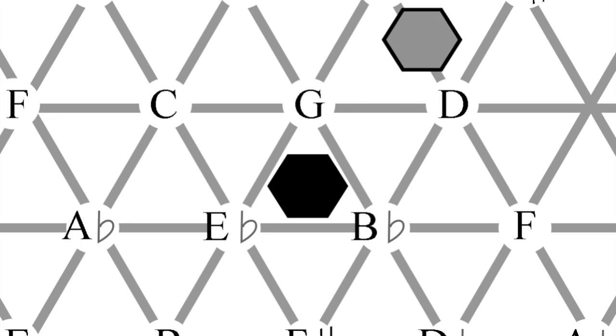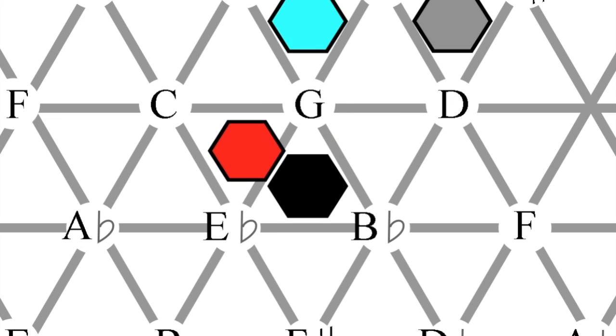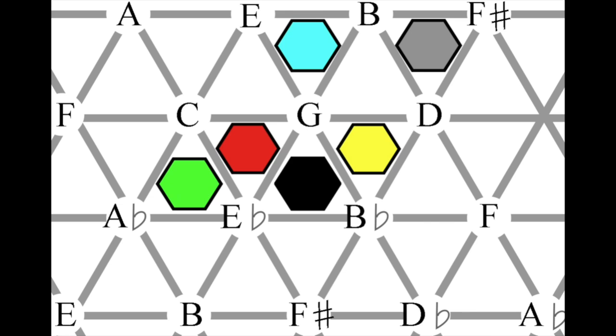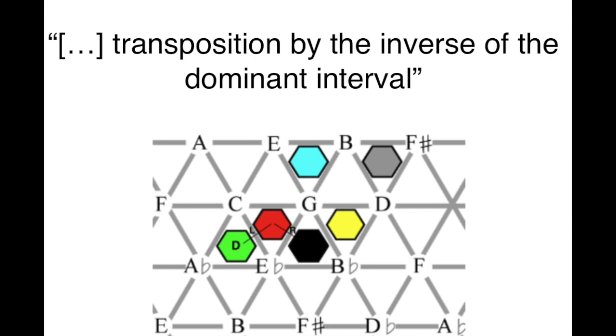Last up is the D transformation, also known as the dominant transformation. It is introduced by David Lewin, who dislikes Riemann's transformational theory and its lack of a transformation between tonic and dominant, except by doing an L followed by an R transformation. He then combines the two as a transposition by the inverse of the dominant interval. The quote is from his work, Generalized Musical Intervals and Transformations from 1987.